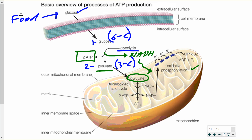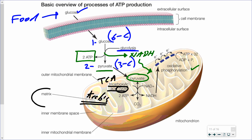In the mitochondria, the Krebs cycle is labeled as the tricarboxylic acid cycle, sometimes abbreviated as the TCA cycle. It's also called the citric acid cycle because citric acid is the first compound formed in this cycle. I refer to it as the Krebs cycle, and that's what you should know it as. The pyruvate, when in the mitochondria, enters the mitochondrial matrix where the Krebs cycle takes place.